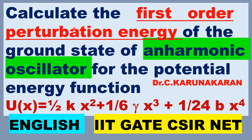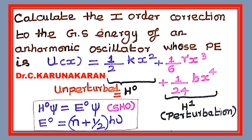What is the formula for calculation of perturbation energy? Let us apply the perturbation theory to calculate the first-order perturbation energy of the ground state of an anharmonic oscillator for the potential energy function as given below. This problem is asked in IIT JAM, GATE, CSIR NET, etc., so it is very, very important. Let us apply the first-order perturbation theory to calculate the first-order correction to the ground state energy of the anharmonic oscillator whose potential energy is given by the following function.